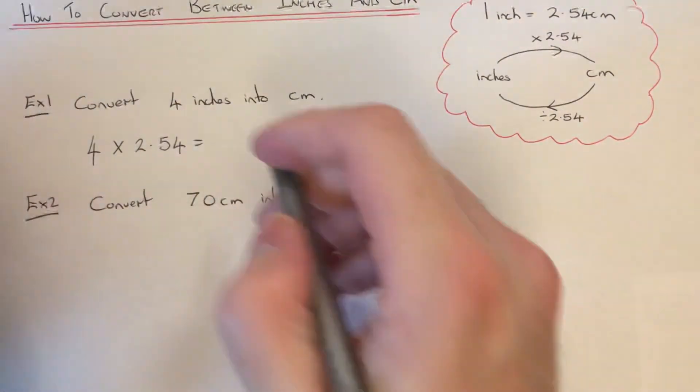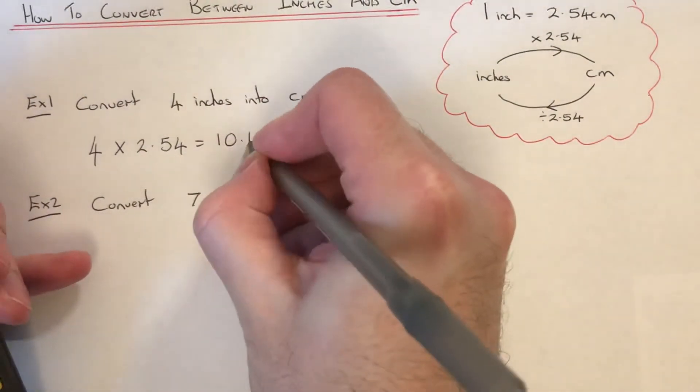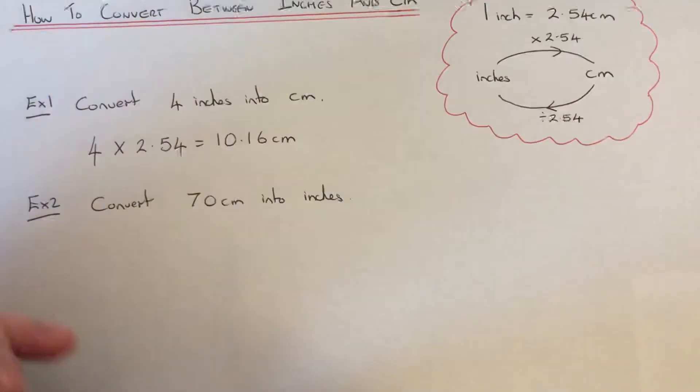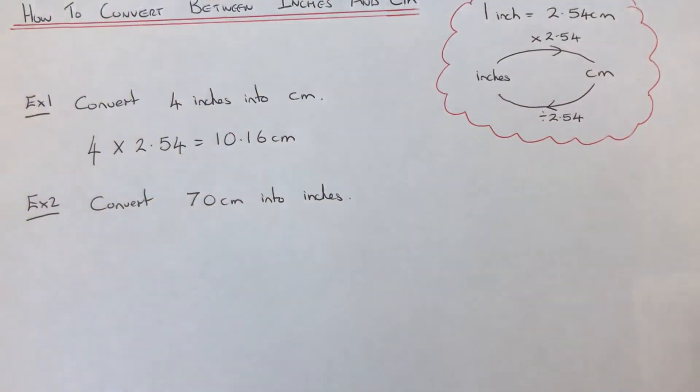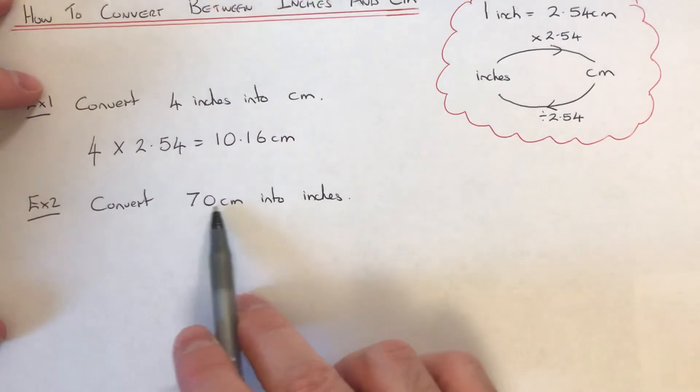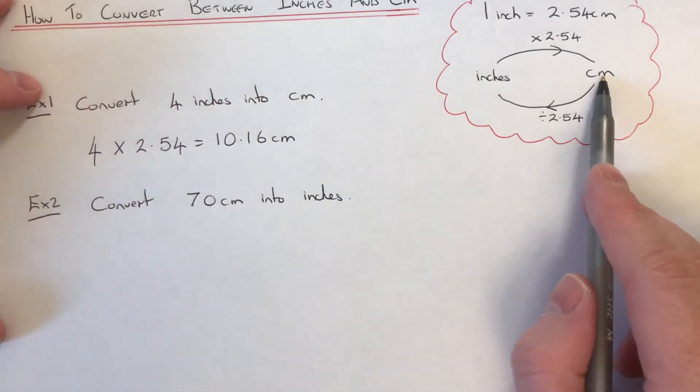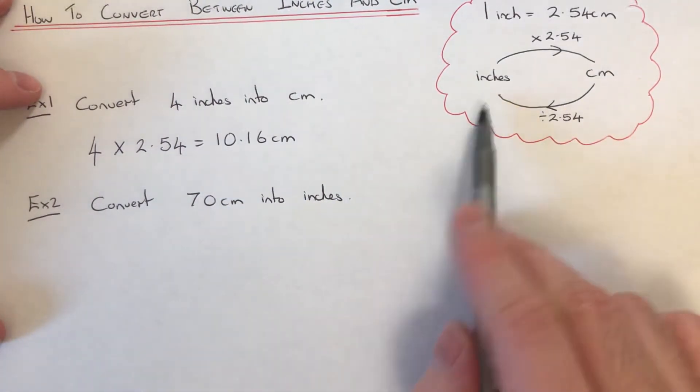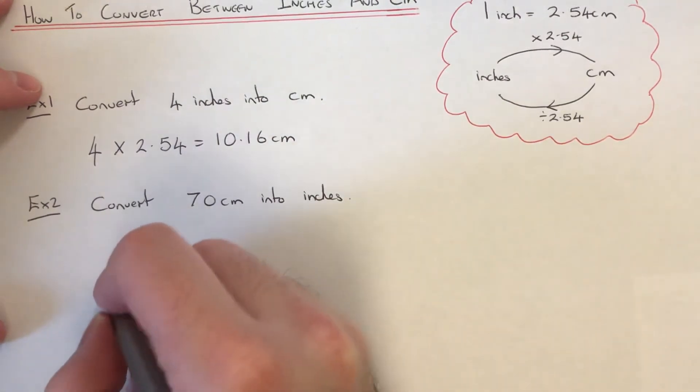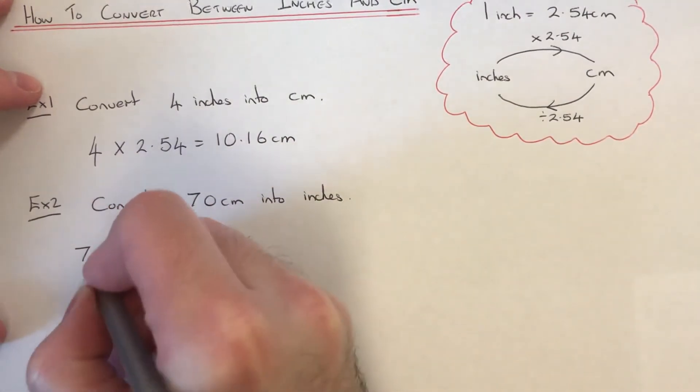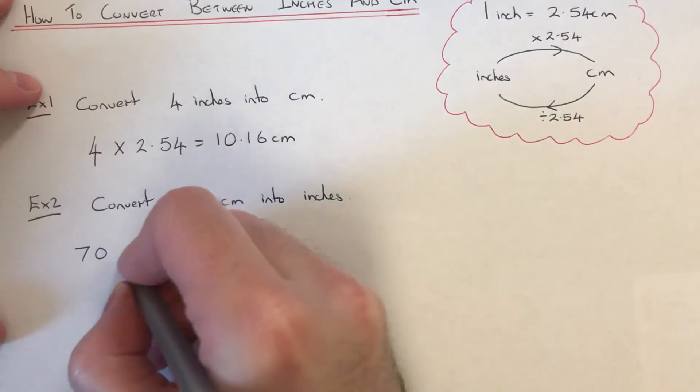Let's move on to the second example. This time we need to convert 70 centimeters into inches. So centimeters into inches, we need to divide by 2.54. So if we write 70 on the next line and we divide that by 2.54.